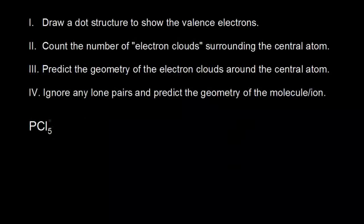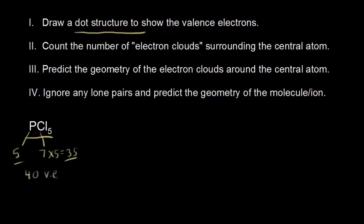Let's use VSEPR theory to predict the structure of phosphorus pentachloride. The first thing we need to do is draw a dot structure to show our valence electrons. We find phosphorus in group 5, so 5 valence electrons. Chlorine is in group 7, so 7 valence electrons, and I have 5 of them. 7 times 5 is 35, plus 5 gives us a total of 40 valence electrons to show in our dot structure.